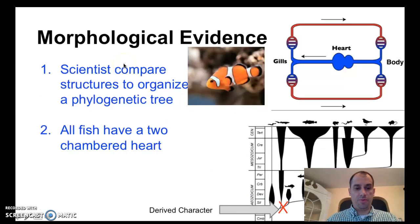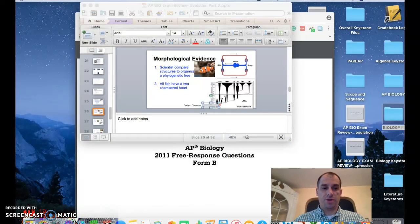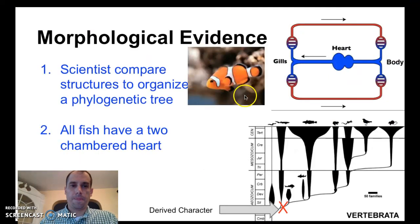We can use structural evidence to help us sort out and create a phylogenetic tree. The structural evidence we're going to use in this case is the structure of a heart in animals. This is a clownfish here. It has two chambers in its heart: chamber one, chamber two. Now, that structure evolved right around here. That means that everything to the left of this X does not have a two-chambered heart. Everything to the right of this X does have a two-chambered heart.